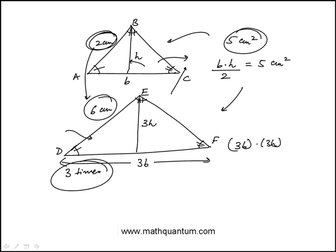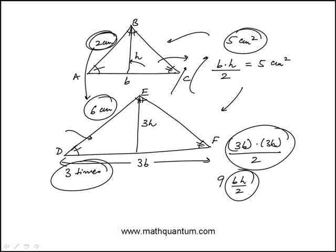This is what we're looking for, and you notice that this is nine times bh over two, which is the area of this triangle. So the area of this triangle would be nine times five, or 45 square centimeters. Essentially, the multiple would be whatever the ratio of corresponding sides - you square that, and that would be the multiple that the area of this triangle would be.